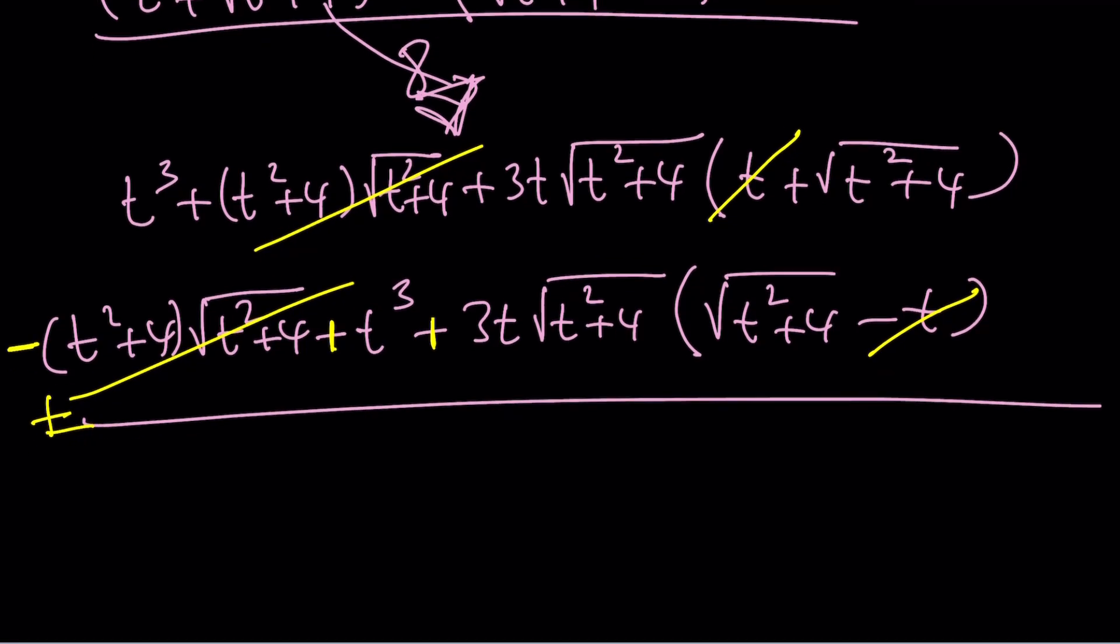So, here's what we're going to get. t cubed plus t cubed is going to be 2t cubed. Plus, when you distribute this, it's going to be 3t times this times that is actually going to be t squared plus 4, right? It should be that. And then, we're getting that thing one more time. So, we might as well just multiply by 2, right? So, it should look like this, I guess, if I didn't make any mistakes.